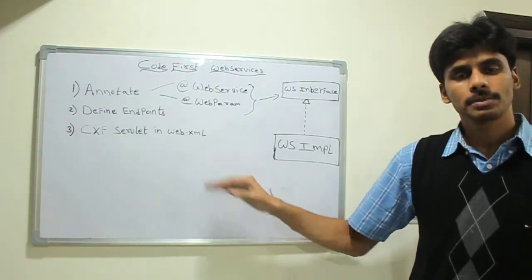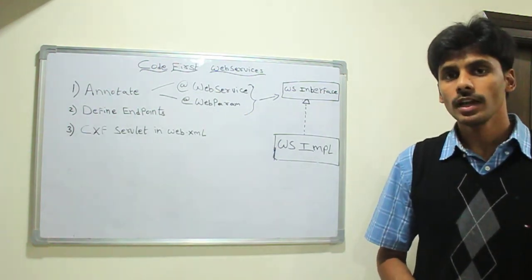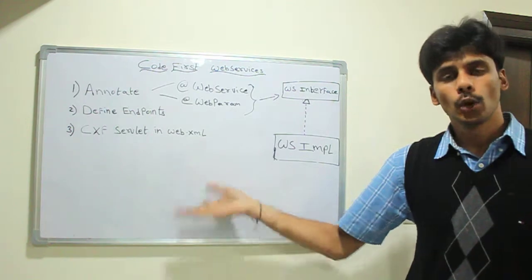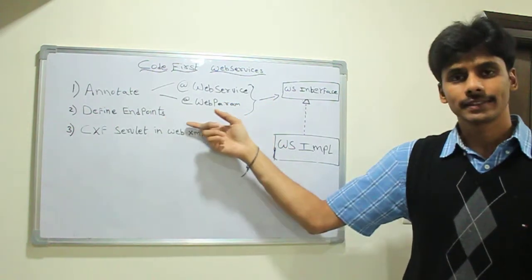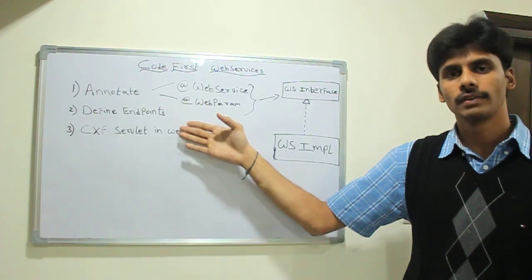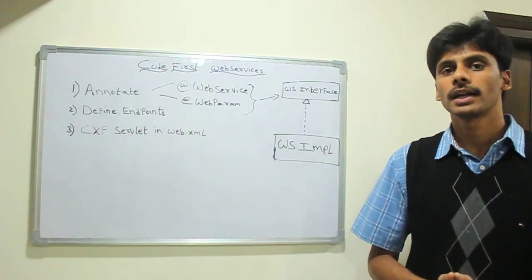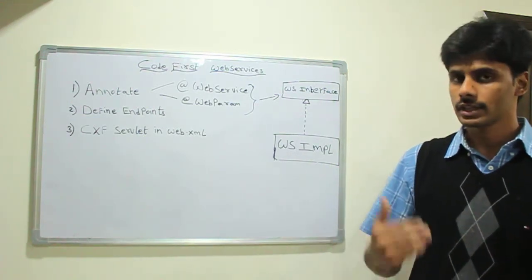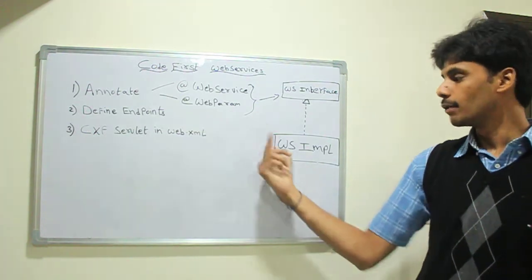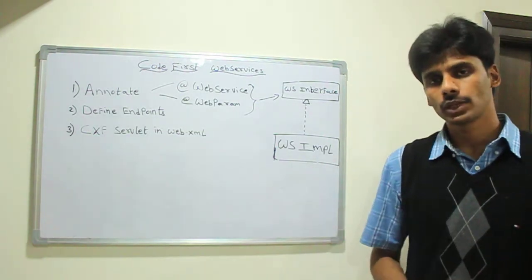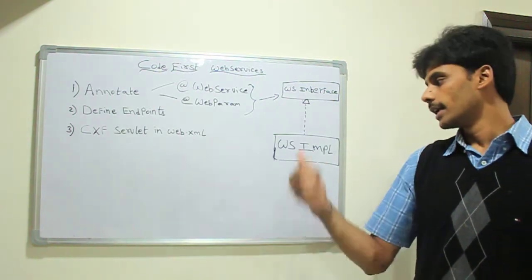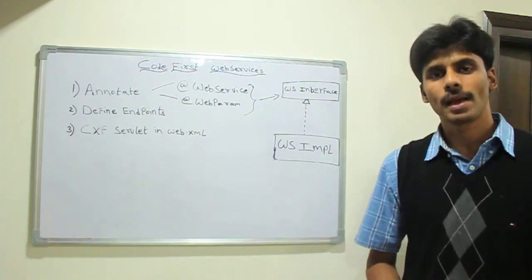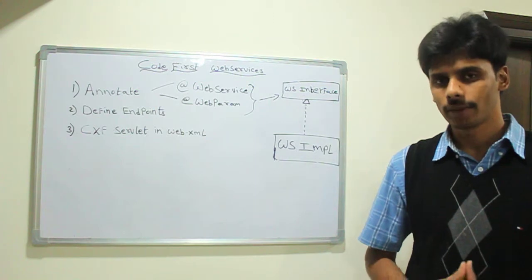Once we do these three steps and deploy our web services application, at runtime when a SOAP request comes in, the Apache CXF servlet loads during startup and reads the CXF servlet.xml — all the endpoints defined there — and it knows which particular endpoint is going to serve a particular SOAP request. So when a request comes in, the CXF servlet invokes the appropriate endpoint. It first deserializes the incoming SOAP message into Java objects, then calls into the appropriate endpoint, gets the response back, serializes the response back into a SOAP message, and sends it back to the web service consumer.